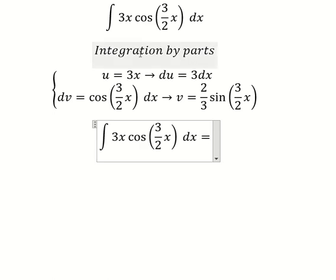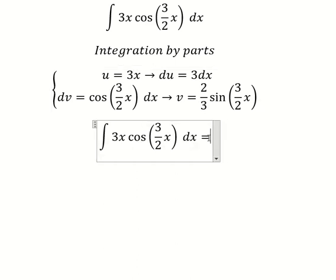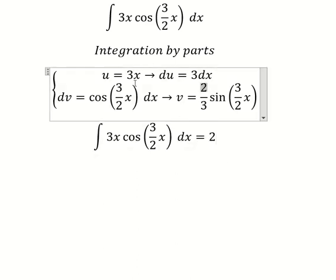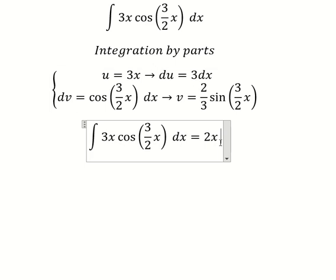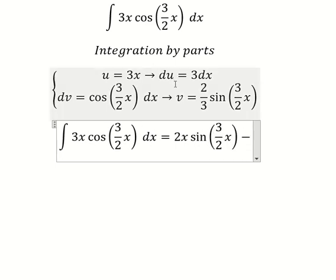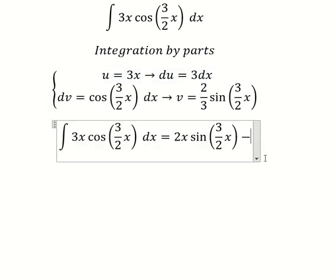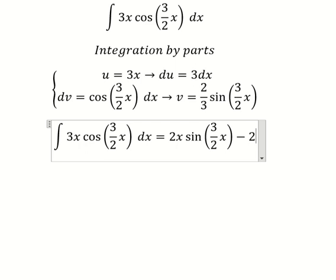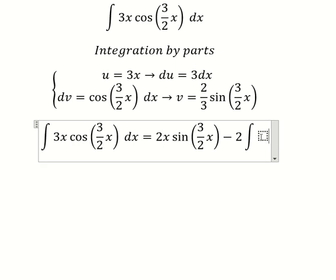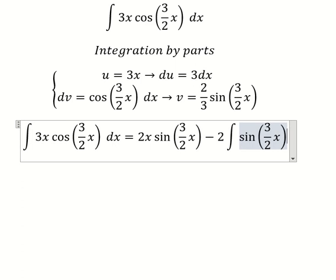So we have u multiplied by v. The 3 cancels with the 3 here, giving us 2x sine of 3/2 x. Minus, we have v times du, so 3 divided by 3 gives us 2, and then we have the integral of sine of 3/2 x dx.